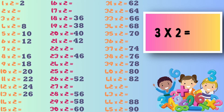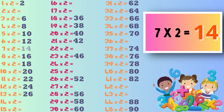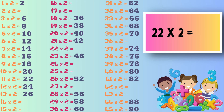Next we have 7 times 2, the answer to this one is 14. Now we have 22 times 2, all the 2's, this equals 44.